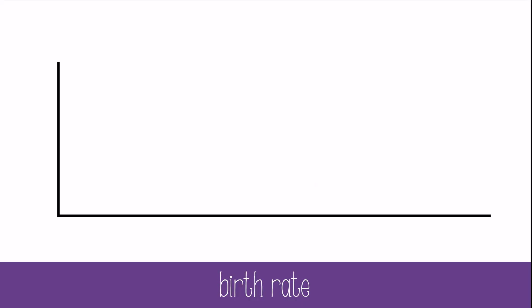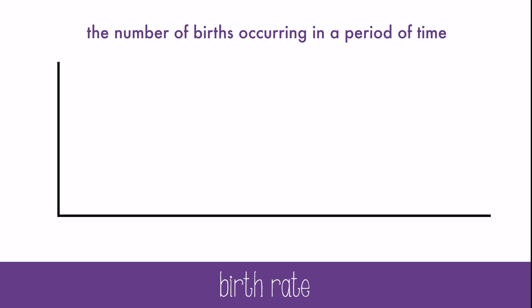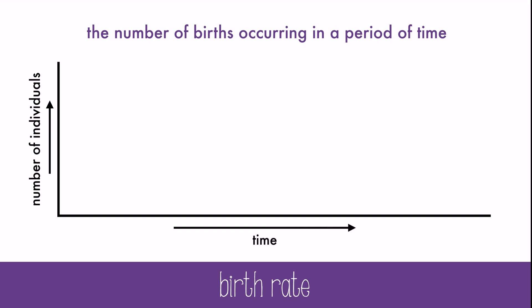Populations will grow and shrink over time for many reasons. One of those is the birth rate, which is the number of births occurring in a period of time. In this graph, with number of individuals on the side and time on the bottom, the overall birth rate is increasing, which means the population is likely also increasing.